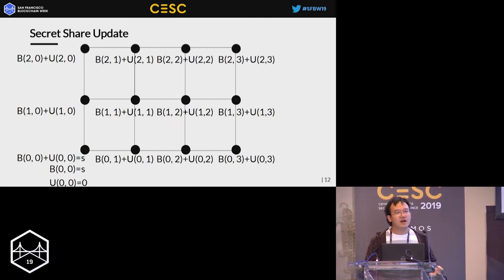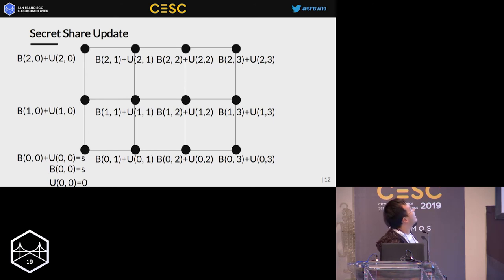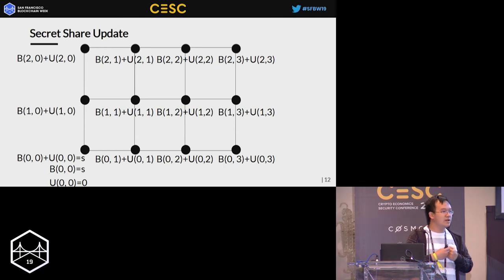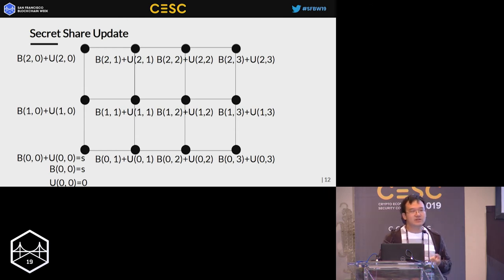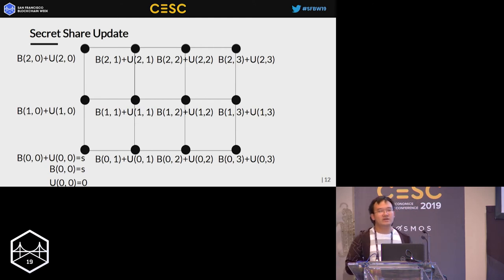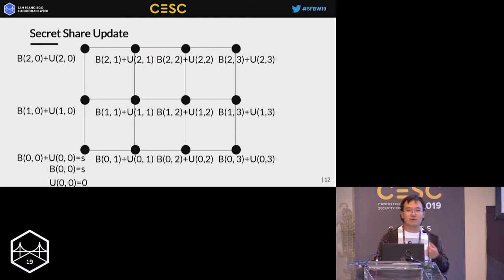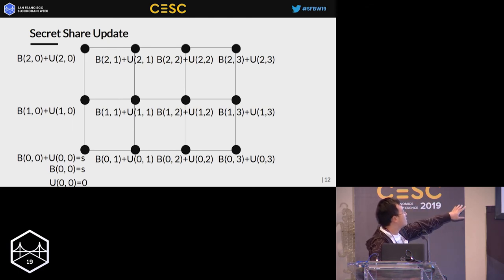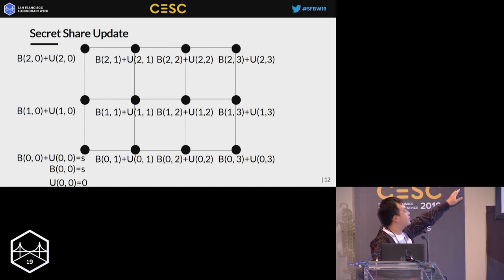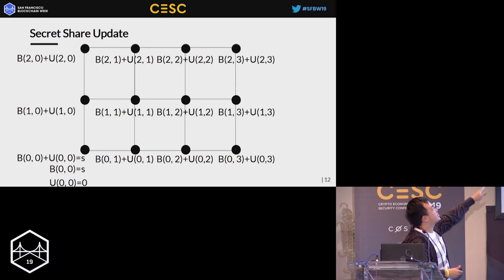After the secret shares are sent to the new committee, they need to update the shares. The high-level idea is that the only term that matters in the bivariate polynomial is the constant term, so we can always add a zero-hole polynomial to it without changing our secret. In this case we add a zero-hole update polynomial to the original bivariate polynomial — the secret does not change but all the secret shares change.